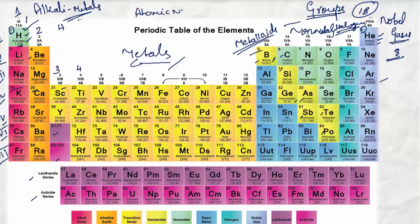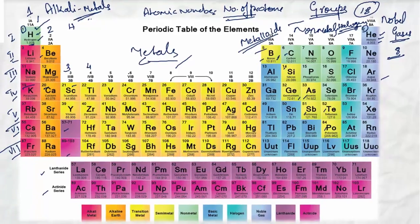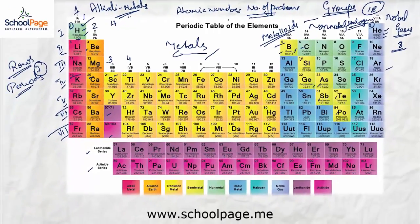When we say atomic number, it means the number of protons. Recall that the number of protons is always equal to the number of electrons in an atom. The reason behind it is to maintain electrical neutrality — atoms are always electrically neutral, so to maintain that neutral nature, atoms will have equal number of protons and electrons.